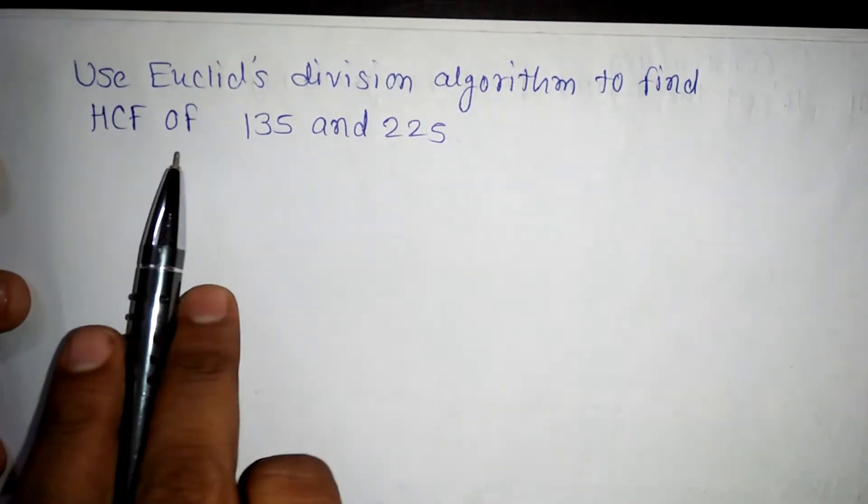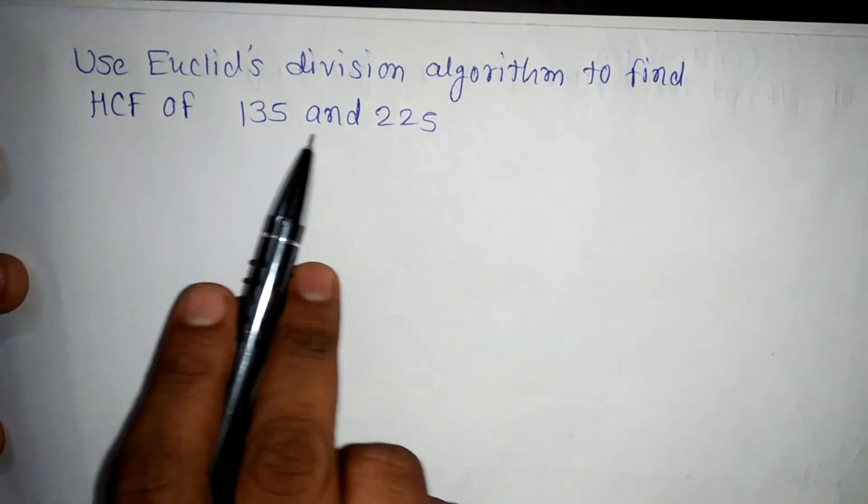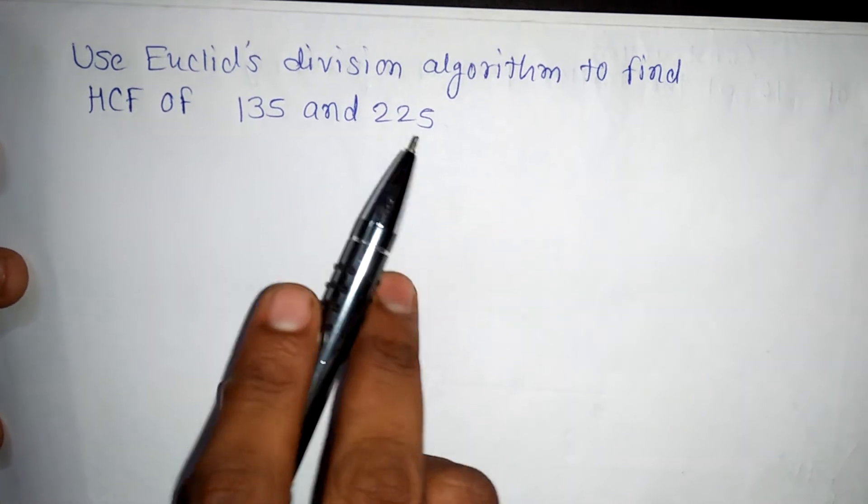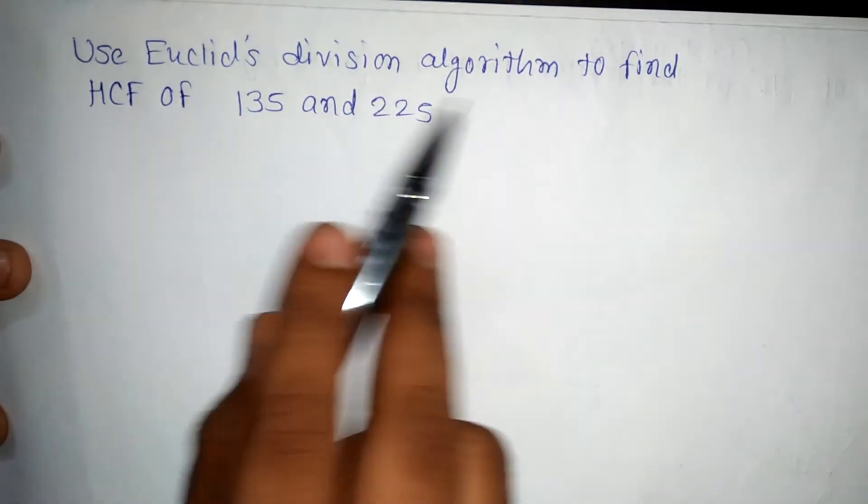Use Euclid's division algorithm to find HCF of 135 and 225. You know that how to find it out with the Euclid's division algorithm.